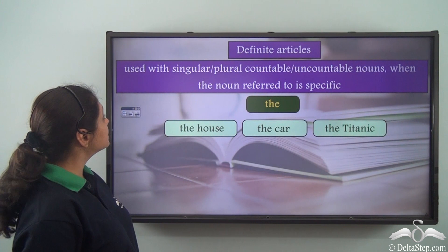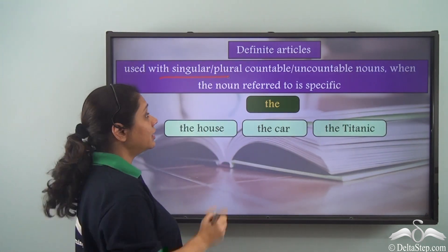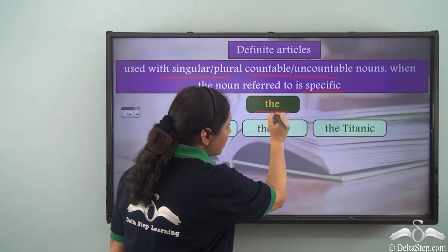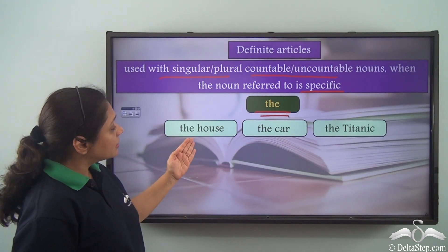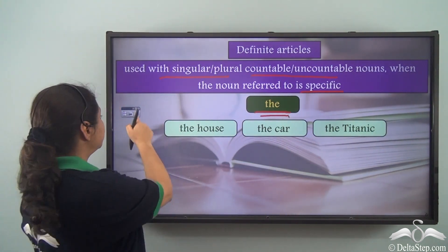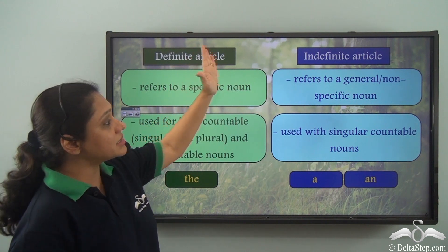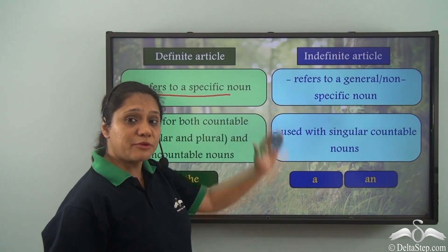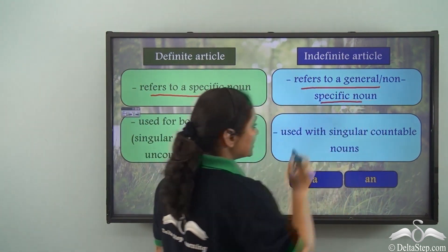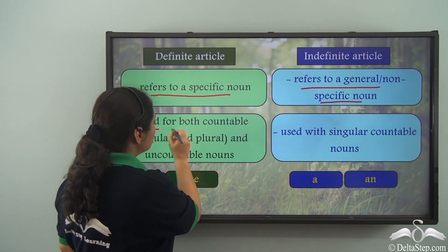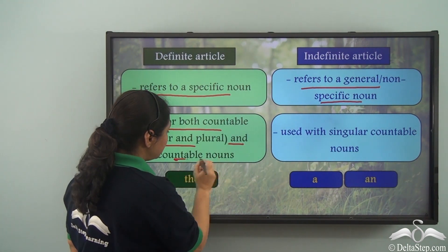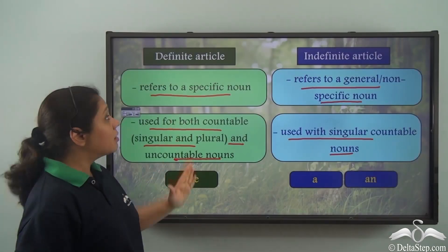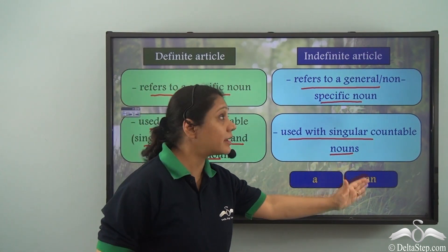So what are definite articles? Definite articles are used with either singular or plural, countable or uncountable nouns, when the noun referred to is specific. The is the only definite article in the English language — for example: the house, the car, the Titanic. A definite article refers to a specific noun, whereas an indefinite article refers to a general or non-specific noun. The definite article is used for both countable (singular and plural) and uncountable nouns, whereas the indefinite article is used with singular countable nouns.